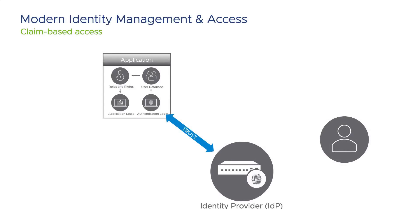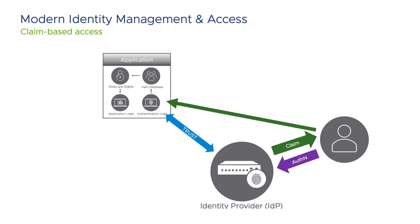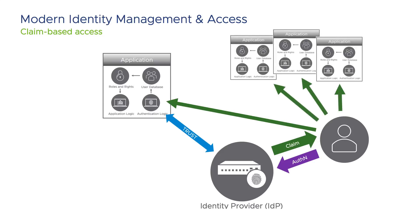To solve this, we have for a long time had claim-based access. In the claim-based model, the developer replaces the authentication logic in the application with a simpler logic that can accept a claim. Trust is established between the application and a source of authentication and authorization — in this case, an identity provider, or IDP. The application will happily accept the claim sent from the IDP. The application may still have a local user store for user settings and access rights, but it does not have to handle any passwords since users never authenticate directly into the application. The user authenticates into the identity provider instead, and a claim or access token is generated by the identity provider and sent to the application. The identity provider can issue claims to all your applications.